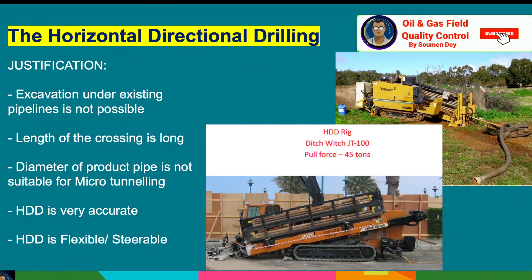Why do we use HDD? Here are some justifications. Excavation under existing pipelines is not possible, so we need HDD. The length of the crossing is very long, so open-cut crossing may not be possible. The diameter of the product pipe is not suitable for microtunneling. HDD is very accurate, flexible, and steerable — meaning controllable.